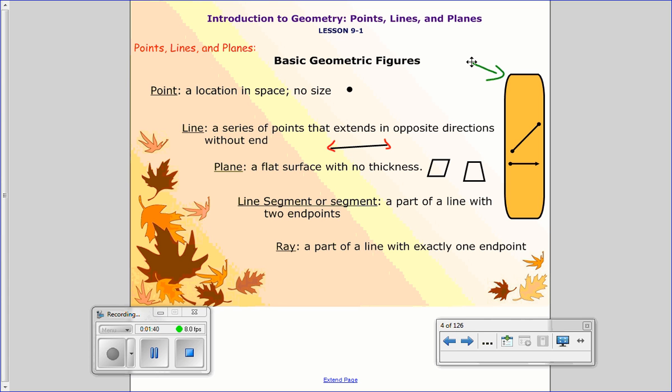Then comes a line segment, or just a segment is another word for it. And it's a part of the line that has two endpoints. So looking at my two choices, well, there's only one with two endpoints. And that would be a line segment.